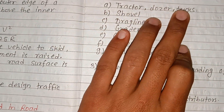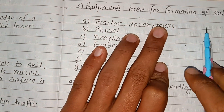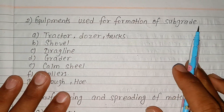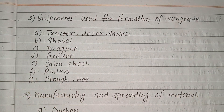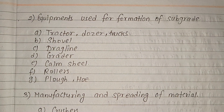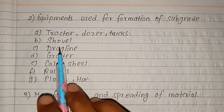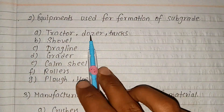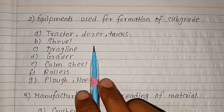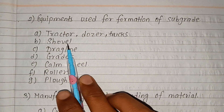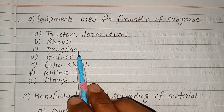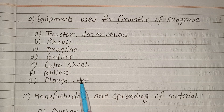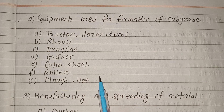Equipment used for formation of subgrade includes: tractor, dozer, trucks, shovel, dragline, grader, cam seat, roller, and plough.